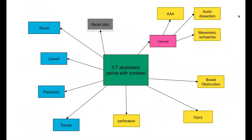Abdominal pain in the ED is a significant cause of diagnostic uncertainty and error. Perforation, AAA, obstruction, and ischaemic bowel are all being missed and leading to patient death. If you suspect any of these, don't delay for CT. Renal colic is not necessarily life-threatening, but CT is the first-line choice when a patient comes with colicky abdominal pain and urine dip shows blood.